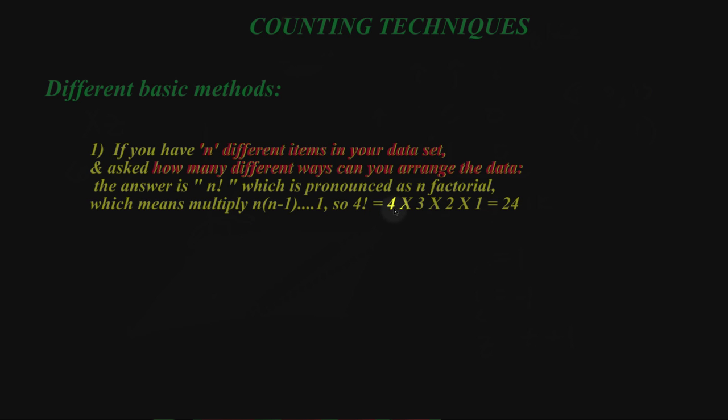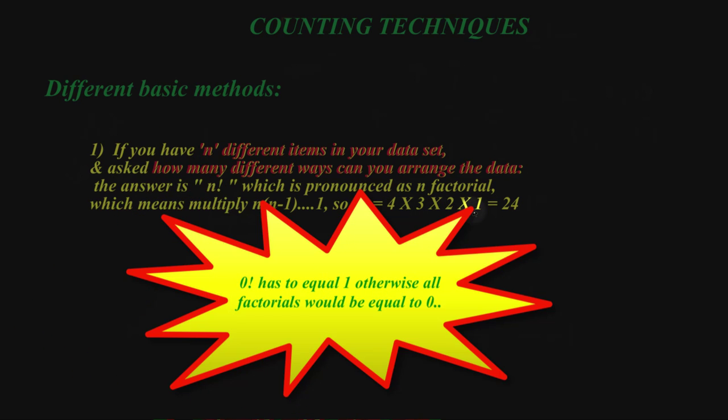So 4 factorial, by example, would be 4 times 3 times 2 times 1. By definition, 0 factorial is 1, otherwise every factorial would be 0.